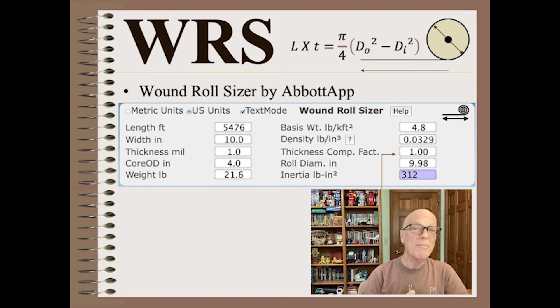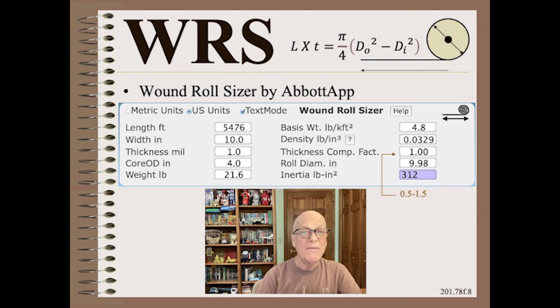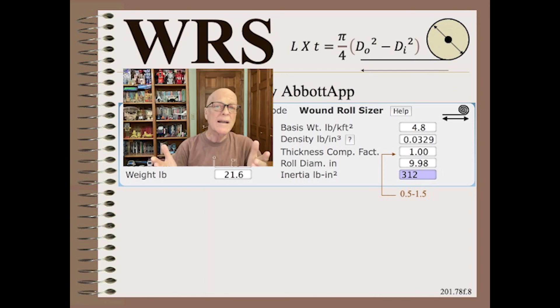And, of course, we have an app for that. The wound roll sizer is the most popular of the free and easy Abbott apps. And not only does it size length and diameter, it forces you to consider the thickness compensation factor that is needed for smooth and fuzzy materials alike. In this example, it is set to 1, but it might vary from as little as 0.5 for an extremely tight nonwoven roll to as much as 1.5 for a very loose roll of thin film. Finally, it calculates many other useful parameters like basis weight and density as well as rotational inertia that is needed for unwind and winder drives.